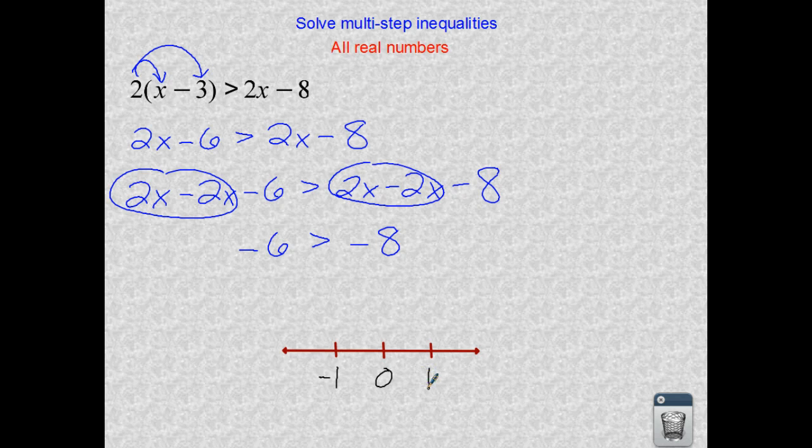To graph this, since every number will work on the number line, we're just going to color in the whole line and the arrows on both sides. The whole line would work for you.